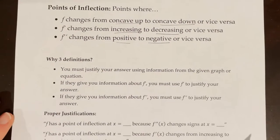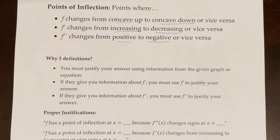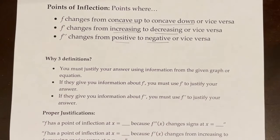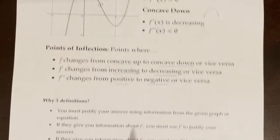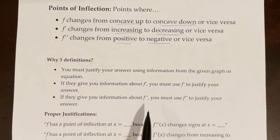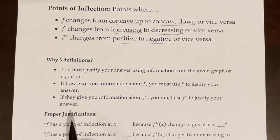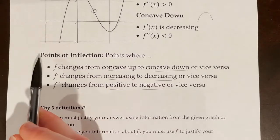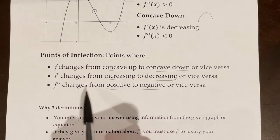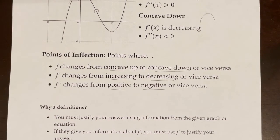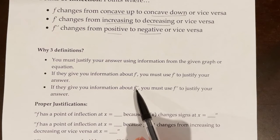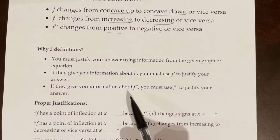You might wonder why we have three separate definitions for points of inflection. You have to justify your answer if you are on an FRQ, using information from the given graph or equation. If they give you information about f', you have to use f' to justify your answer — you can't start talking about f''. If they give you information about f'', you must use f'' to justify your answer, saying something like: there's a point of inflection at x equals 3 because f'' changes from positive to negative at x equals 3.